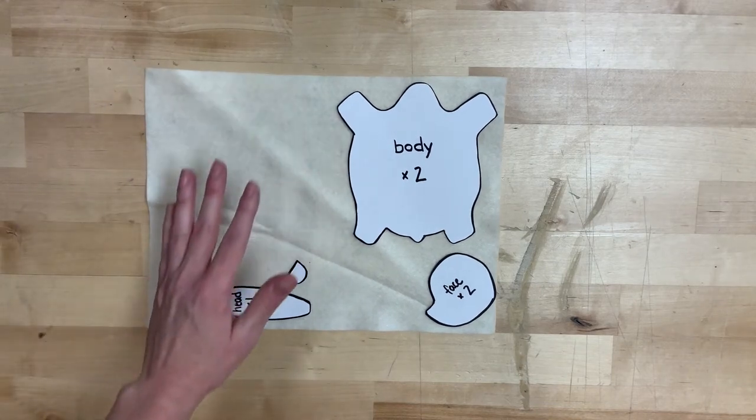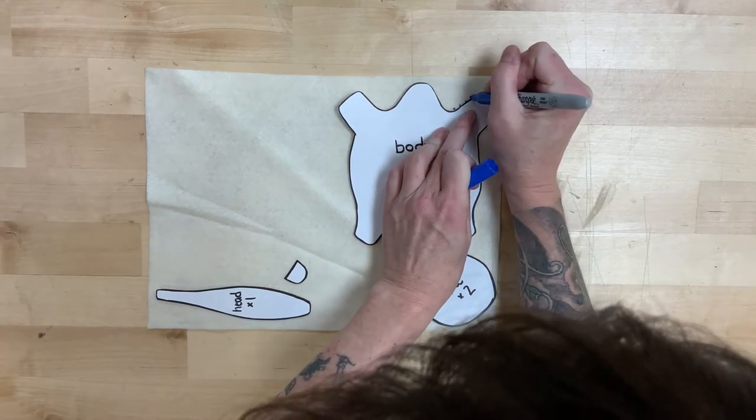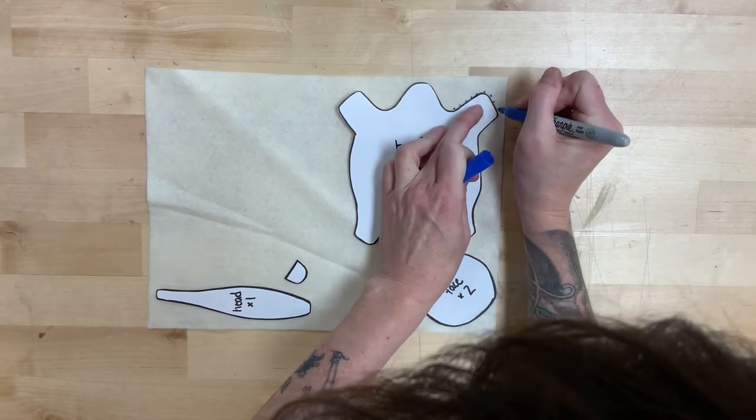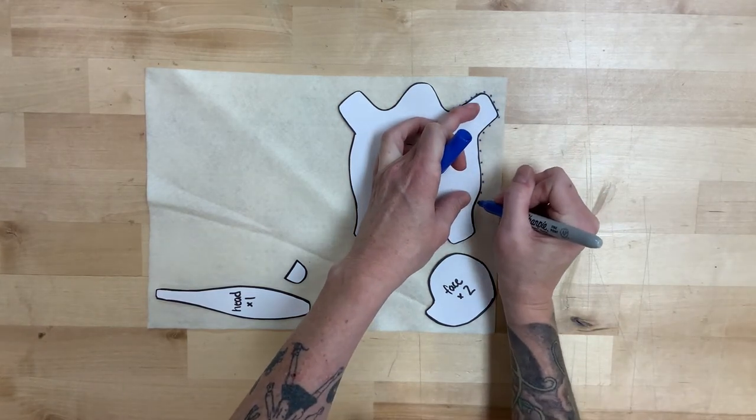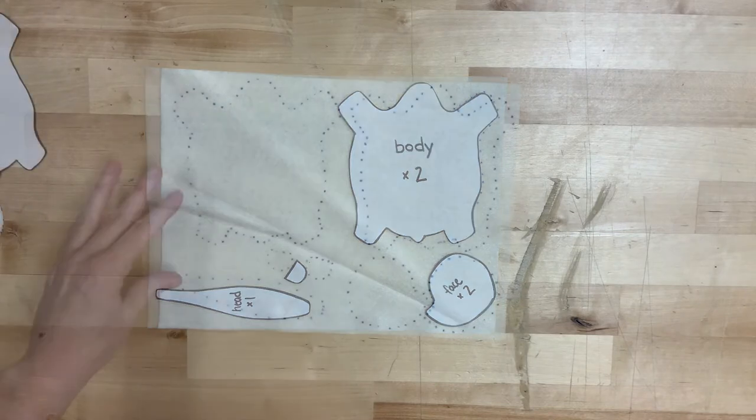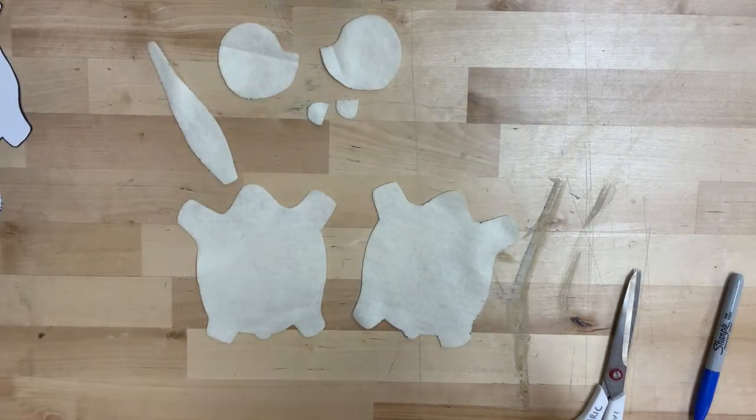You're gonna need two of the body, two of the ear, and two of the face. And something that I like to do, because I'm not very good at pinning, is just kind of make a dot pattern around it. And then even if that paper comes off, I know exactly where to cut. It'll look something weird, sort of like this. And ta-da! Here we go.